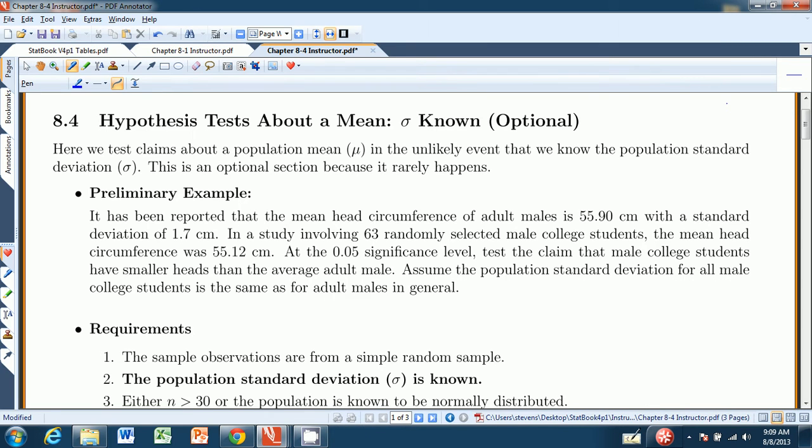Hello and welcome to chapter 8.4 from Stevens' Introduction to Statistics, the Think and Do book. In this chapter we're going to talk about hypothesis tests about a mean, but in this case we're talking about the unusual situation in which we know sigma, the population standard deviation. I say that's unusual because if we're trying to test a claim about the population mean, it's highly unlikely that we're going to know the population standard deviation. And so that's why I consider this section optional. It's decent for demonstrating how to do a hypothesis test, but in practice you would seldom find yourself doing this.